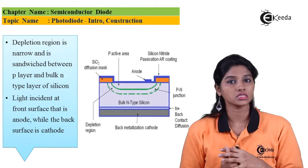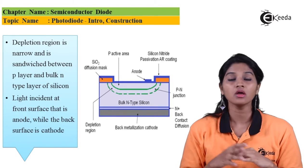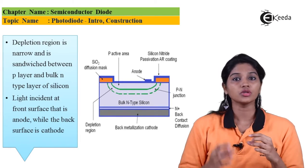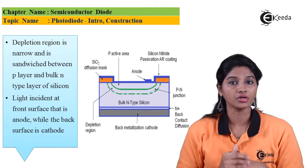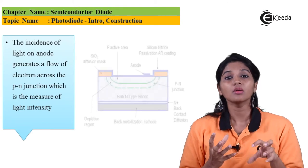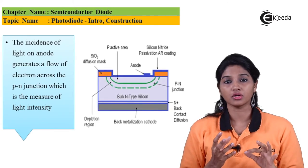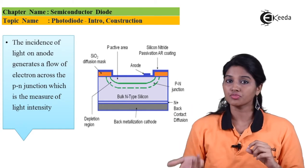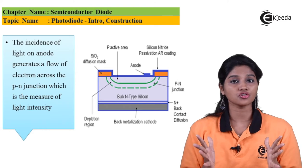The front surface — that is, the surface on which the light falls — is considered the anode, and the back surface is considered the cathode. Whenever light falls on the photodiode, the recombination of electrons and holes takes place, and due to this an equivalent current or voltage is generated at the output. The amount of current or voltage generated depends upon the intensity of light falling on the photodiode.